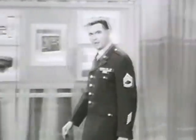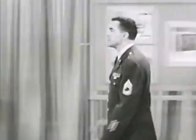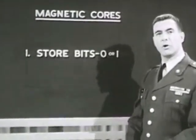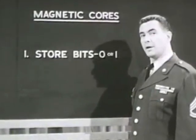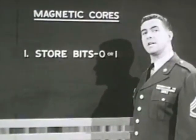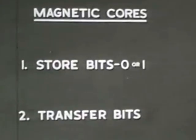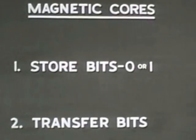So far, we've been establishing the function of magnetic cores. They store binary digits, or bits — zero or one. Now we're going to see how they do it, and also how they transfer bits from one core to another. To explain how cores store binary digits, we must know how they are constructed.